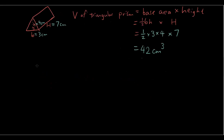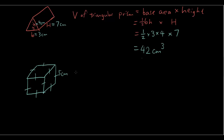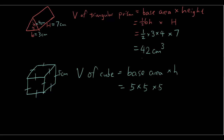The simplest one is a cube. If each side is 5cm, the volume is base area times height — which is 5 times 5 times 5, giving 125cm cubed.